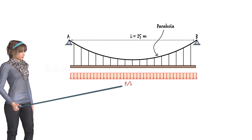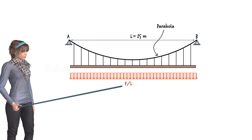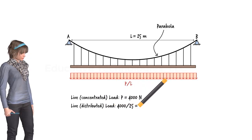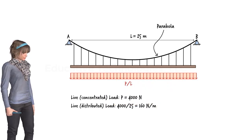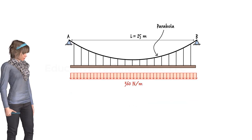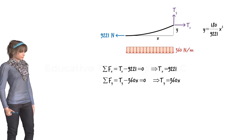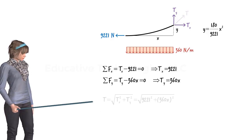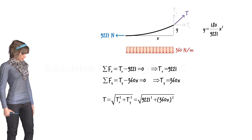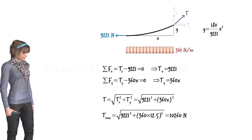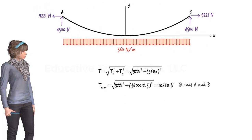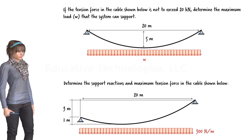We can assume that the posts at the end of each main cable act as pin connections. Although the bridge could be subjected to one or more concentrated loads, we start our analysis assuming no such load is present. The only load to consider is the uniformly distributed dead load due to the weight of the bridge deck. Let's draw the free body diagram of the system. Since the ends of the cable are pinned, we end up with a pair of reaction forces at points A and B. Please note the position of the coordinate system — we have placed the origin at the lowest point of the cable.